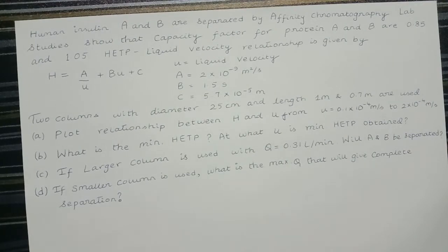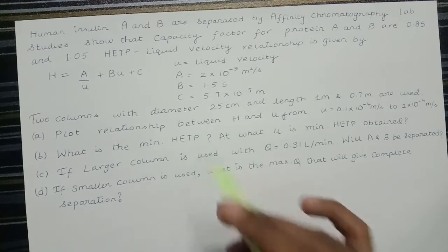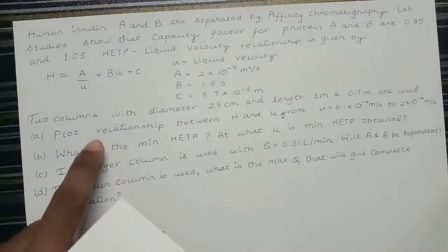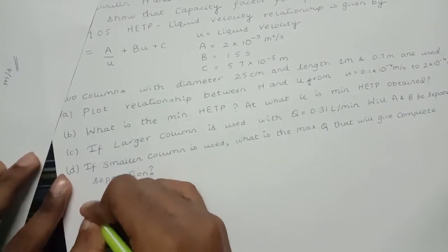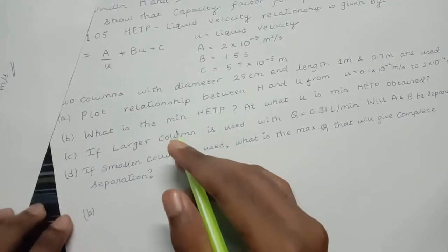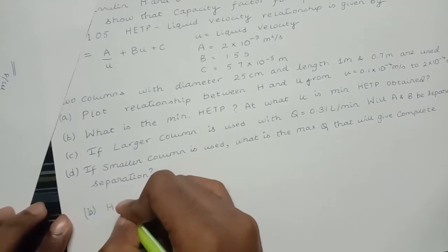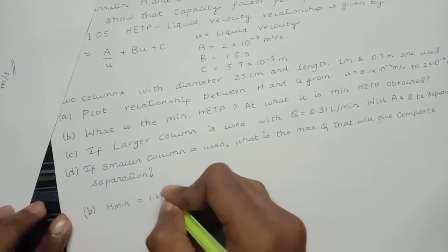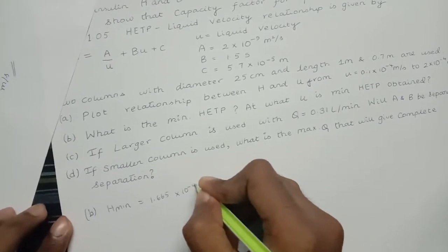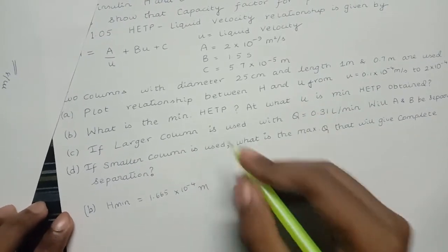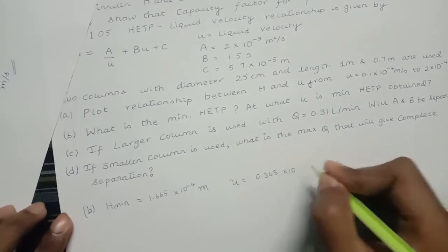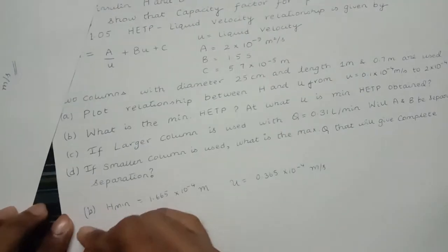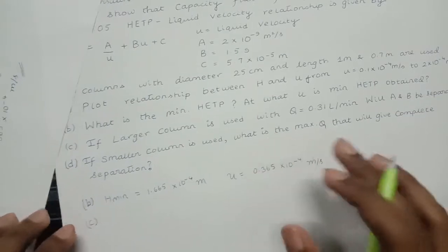For part b, we solved by plotting to establish the relationship between H and u. The minimum HETP value, H minimum, is equal to 1.665 × 10⁻⁴ meters, and we got this HETP at a liquid velocity u equal to 0.365 × 10⁻⁴ meters per second.